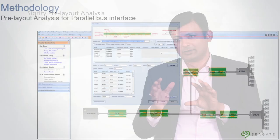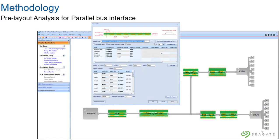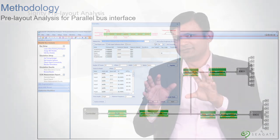We started with the pre-layout simulation, and during this simulation we actually find out what is the best topology for a particular bus. We finalize the stack-up, the target impedance for all, and the spacing we are trying to achieve. Following this, as output of this stage, we have the constraints which are available for us and the layout team.